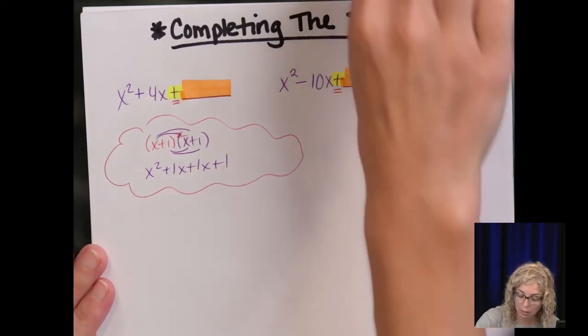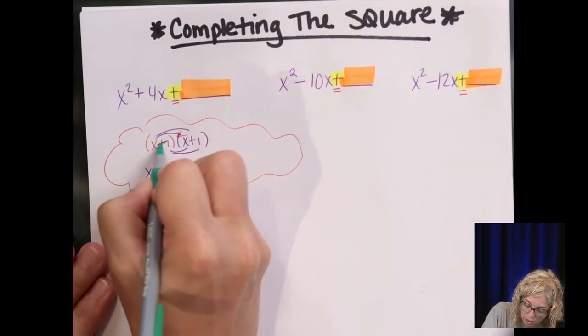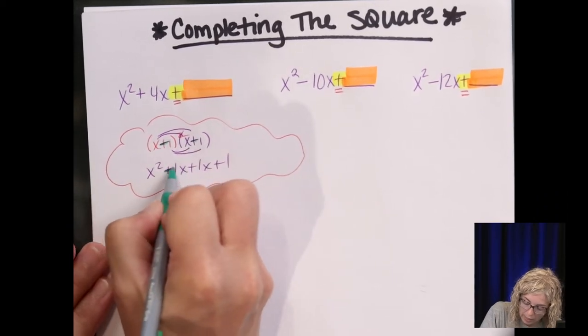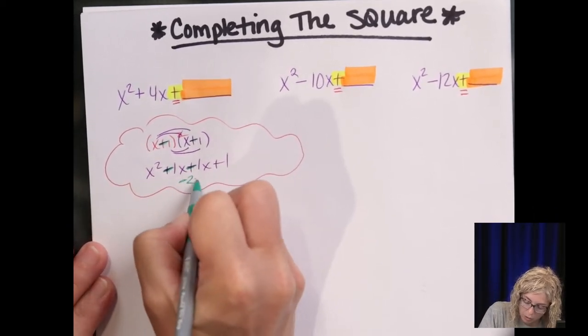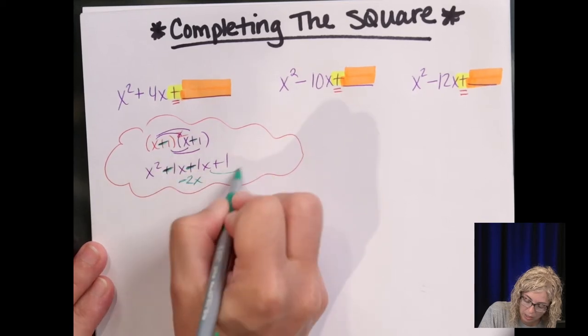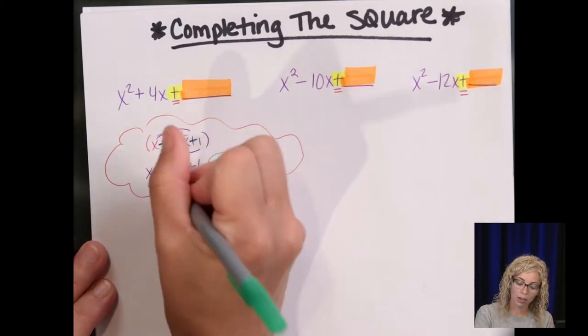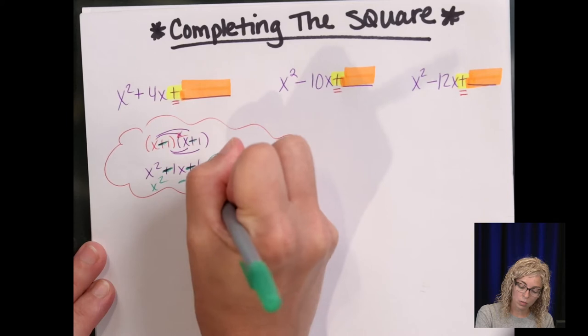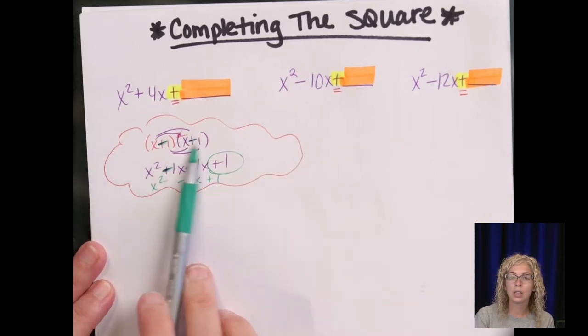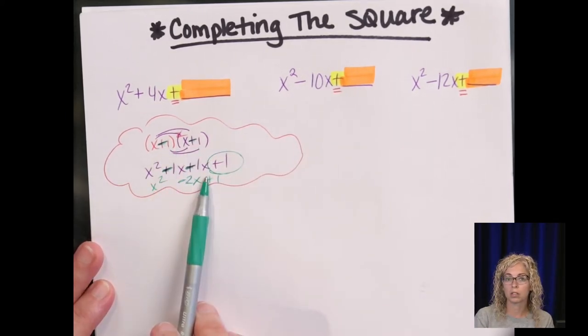Even if this was a minus sign, it would be minus, minus, so we get minus 2x in the middle, but still negative times negative is plus. So no matter whether it's plus or minus in these binomials, we end up with a plus.